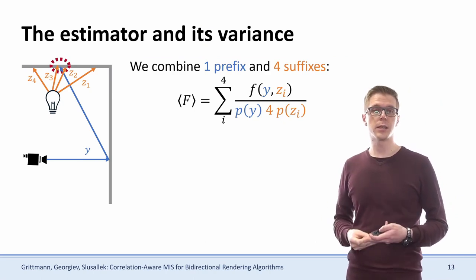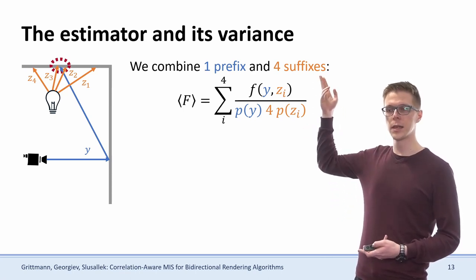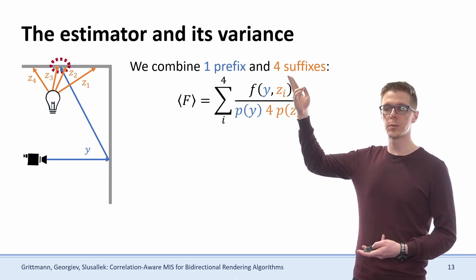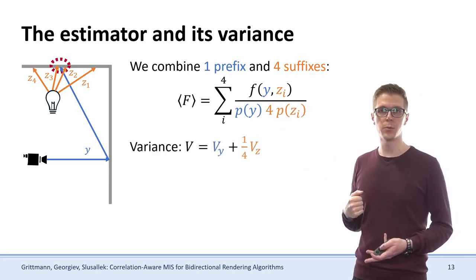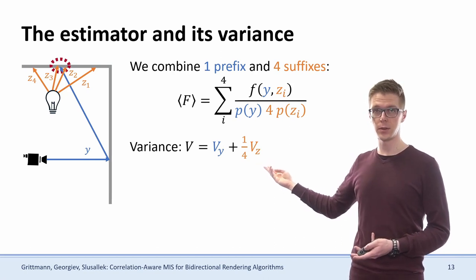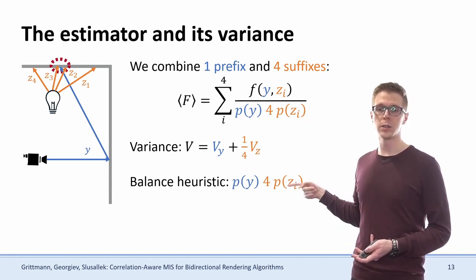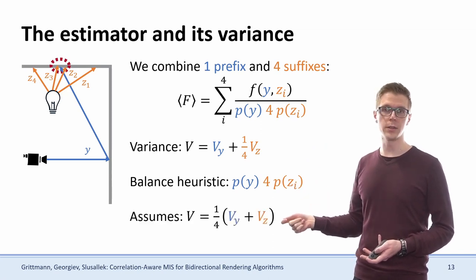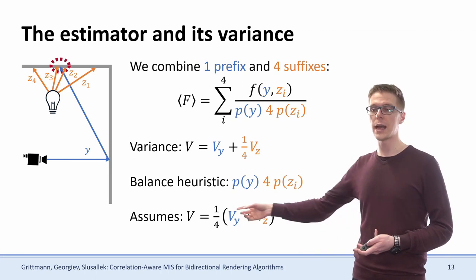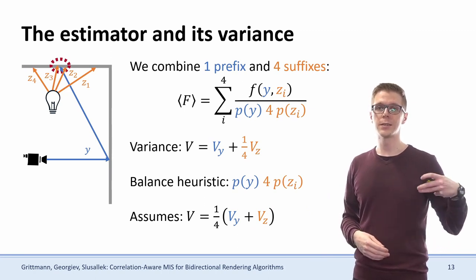The estimator for such a splitting technique again sums over all the samples — basically summing over all the suffixes — computing the combined contribution and dividing by the combined PDF and the total number of samples, which is the number of suffixes. The variance of this estimator can be written as the sum of the prefix variance and one over the number of suffixes times the suffix variance. In contrast, the balance heuristic effectively assumes that all variance is reduced by the number of samples. And if most of the variance is actually in our prefix, then we can get very poor results, where the weight for the balance heuristic is far too high for that technique.